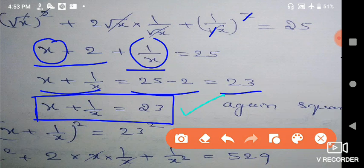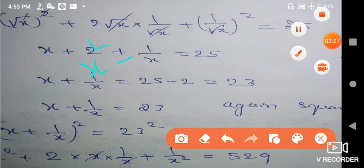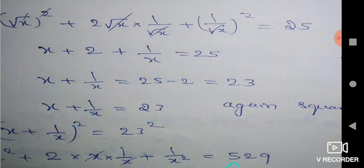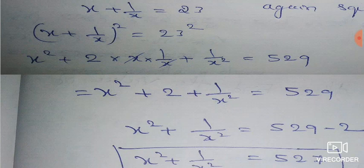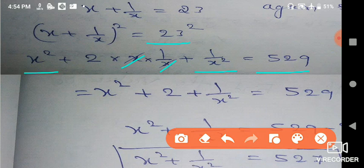So x + 1/x whole square is equal to x² + 1/x² + 2. Applying the same a + b whole square formula: x² + 2 times x times 1/x plus 1/x² equals 529. That is 23 squared equals 529. So x² + 1/x² + 2 equals 529.